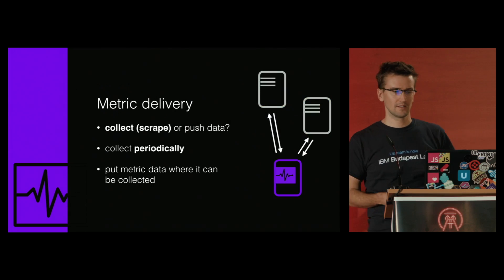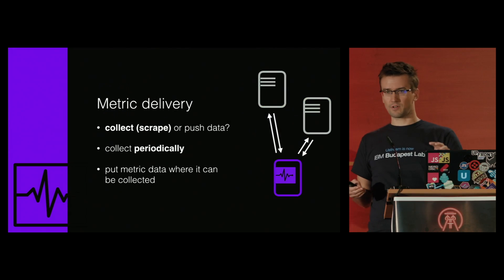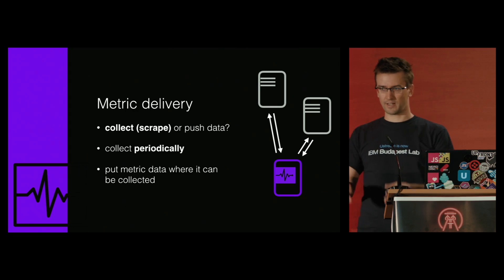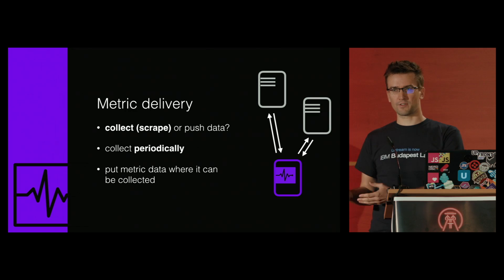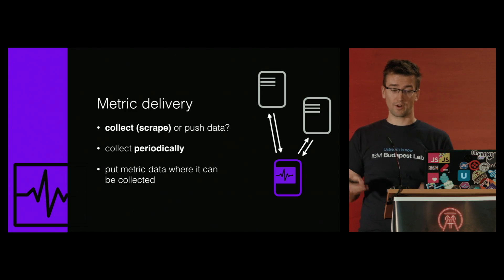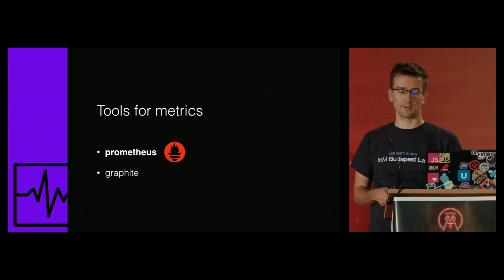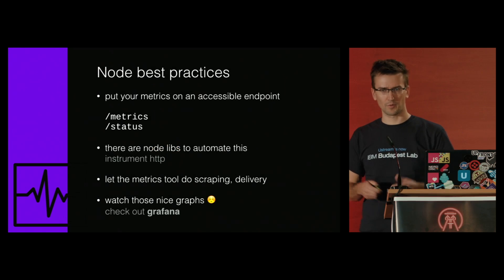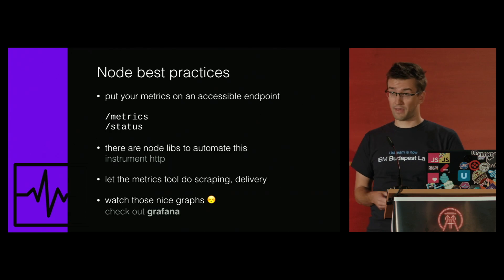All this data has to be collected and aggregated somewhere to have meaning. Delivering metrics can happen two ways: either you push it to a service or you just provide the data and let the service collect them. Since your application's job is not to send metrics anywhere, you should let the metrics service come and do the collection. This is called scraping — you just provide the data and the scraper comes and does this periodically. Some great tools for metric collection are Prometheus and Graphite.